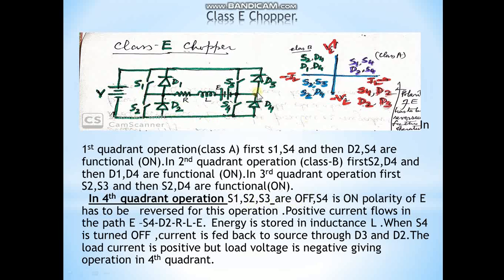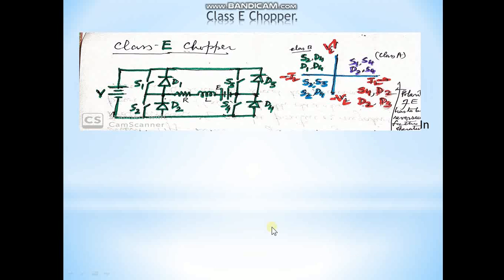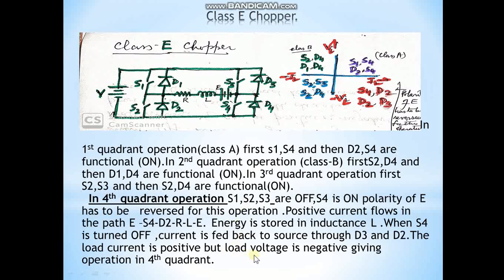For fourth quadrant operation, S1, S2, and S3 are off, S4 is on, and the polarity of the EMF is reversed. Current flows such that load current is positive. When D2 and D3 are on, V is connected so load voltage is negative.